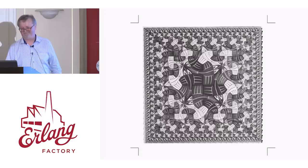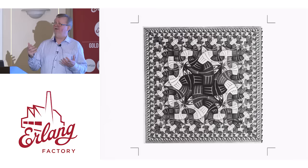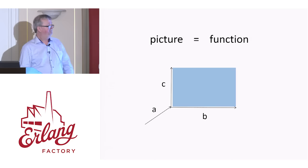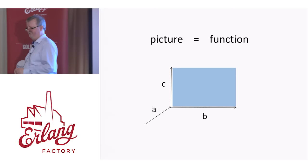There's one thing I haven't told you. Of course, Peter had to represent the picture somehow. How do you think he might have represented a picture? As a function, of course. What he did — and this was very clever — Peter represented a picture by a function that, given three vectors A, B, and C, would return a list of drawing commands that would draw the picture in the blue box that those three vectors define. This was very clever because it made it very simple to define the operations for putting pictures together.